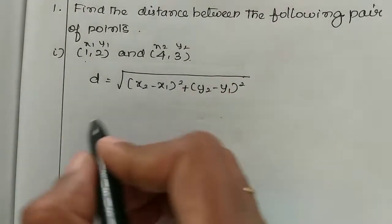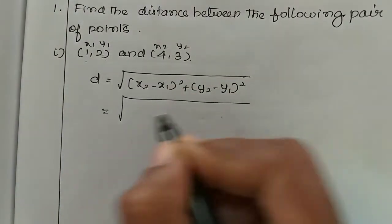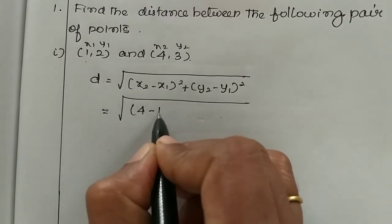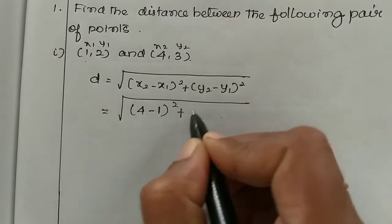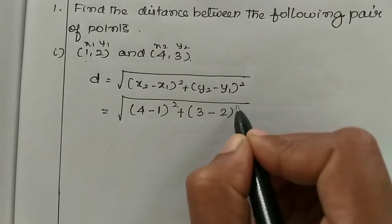So x1, y1, x2, y2 mark. Root of x2 is 4 minus x1 is 1 the whole square plus y2 is 3 minus y1 is 2 the whole square.